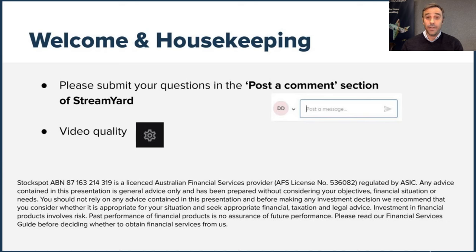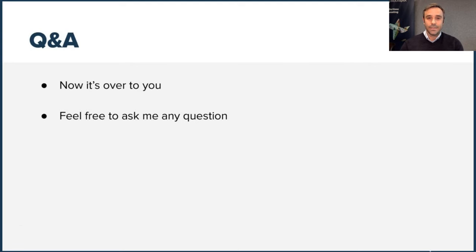If your video looks a little bit grainy, there is a way of solving that. You can see at the bottom of your screen there's a little cogwheel. If you click on that you should be able to change the visual resolution to 1080, which should stop any pixelation, so I'd suggest doing that now. Without further ado, let's get started and I'll start with a few of the questions that have been emailed through from clients over the last couple of days.